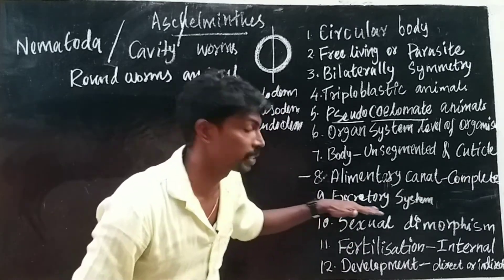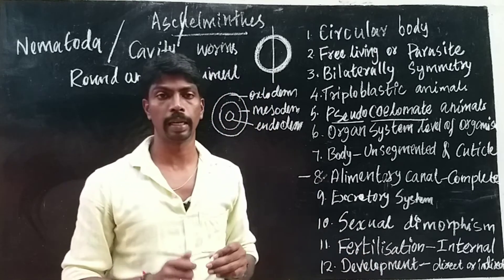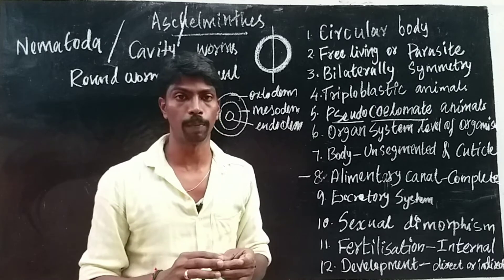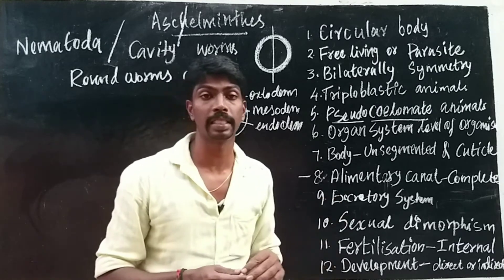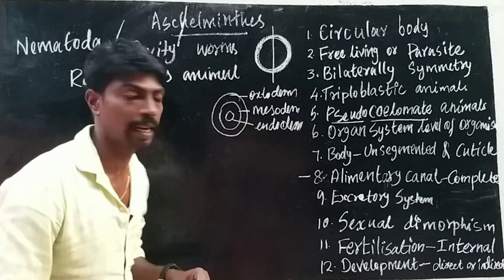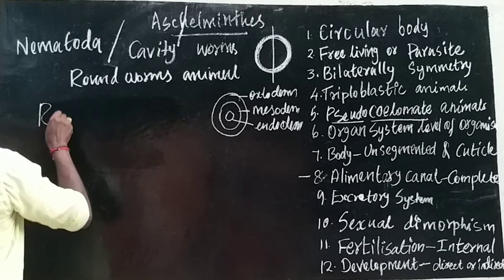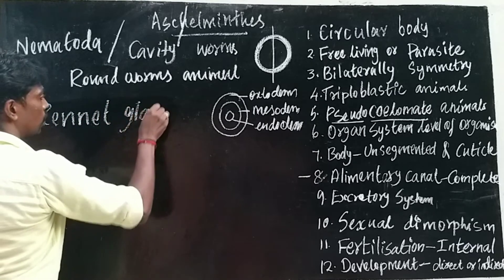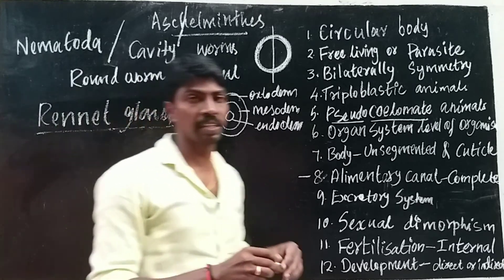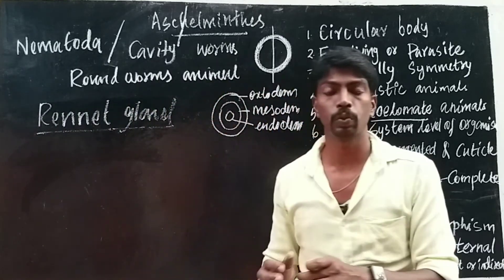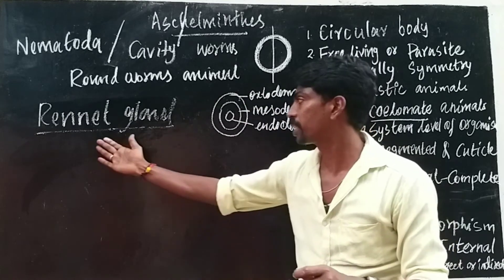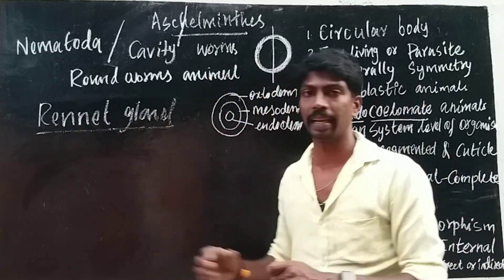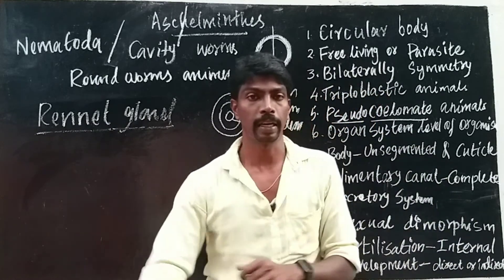The excretory system is also well developed in Aschelminthes. The excretion is performed by a specialized gland known as the rennet gland. So the excretory system is well developed and a rennet gland is present in the body.